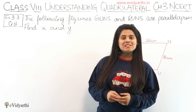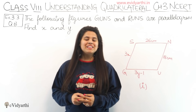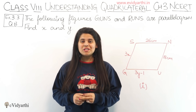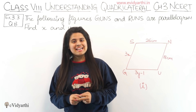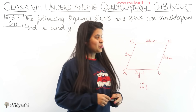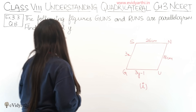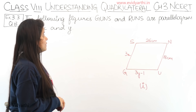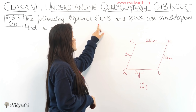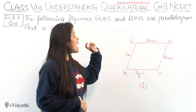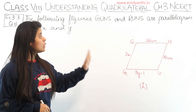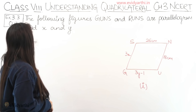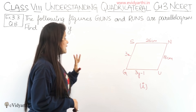Hello everyone, this is Manzi from Irinadi.in. Now we are starting with question number 8, exercise 3.3. So in this question we have the following figures — GUNS and RUNS — which are parallelograms, and we need to find X and Y.